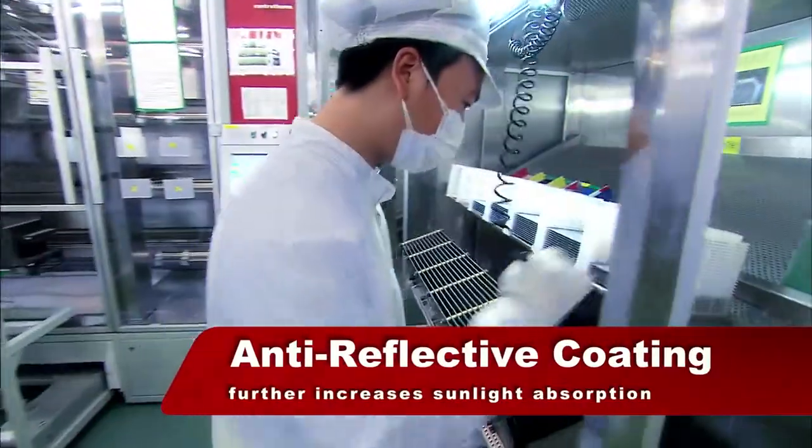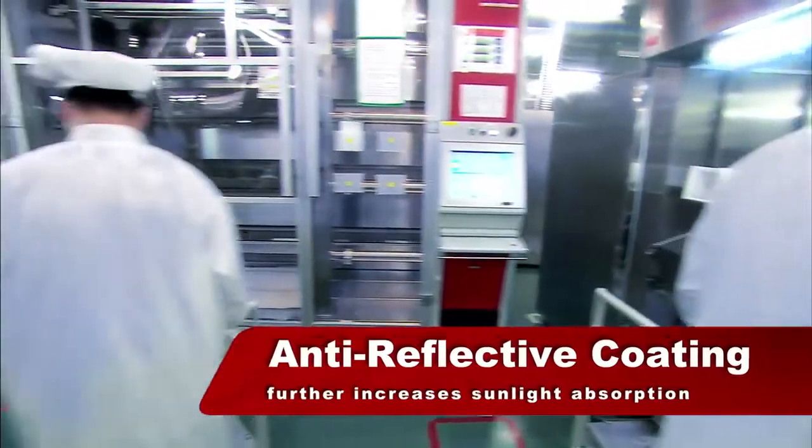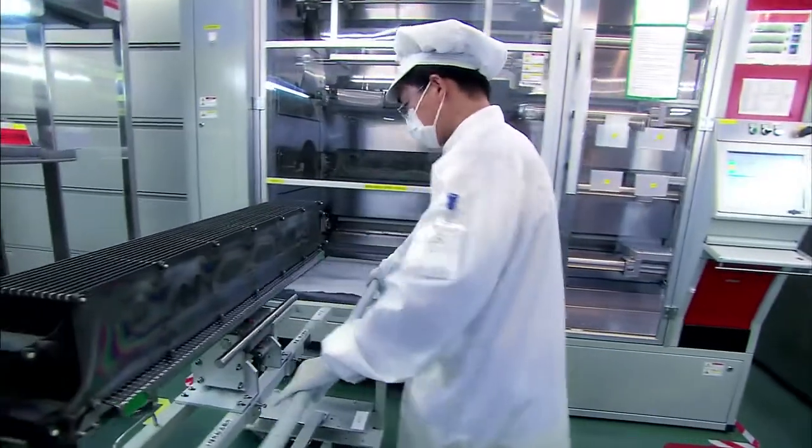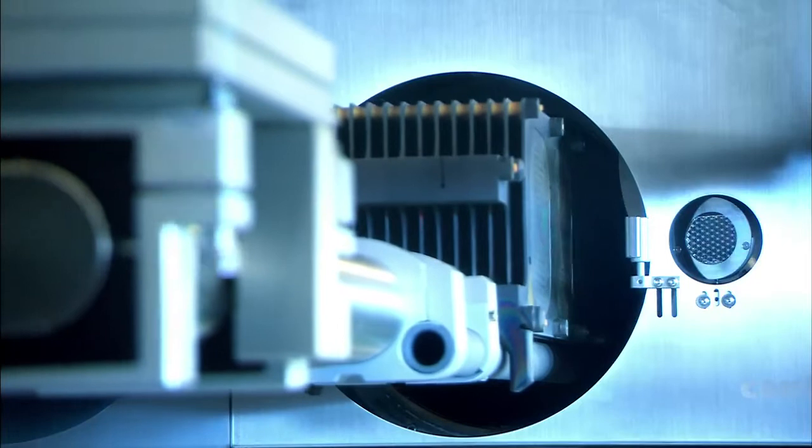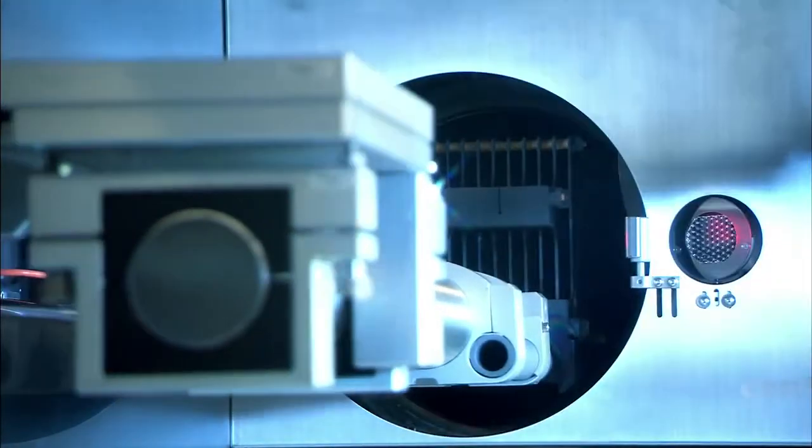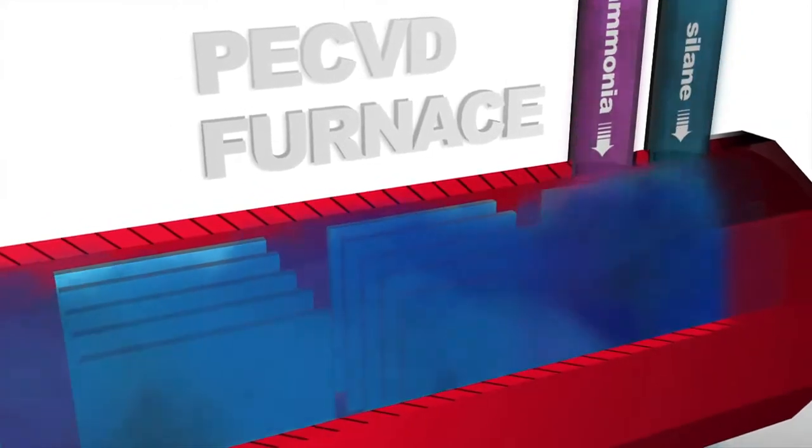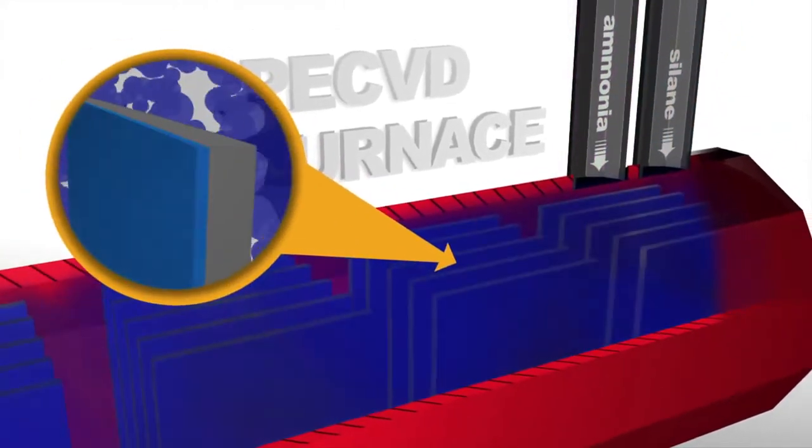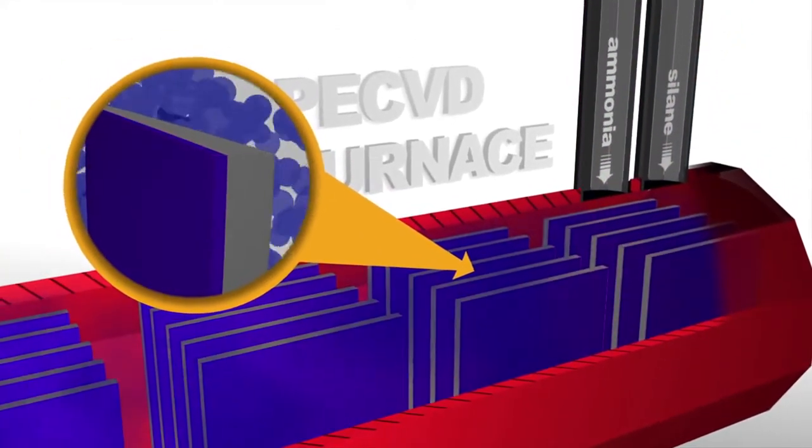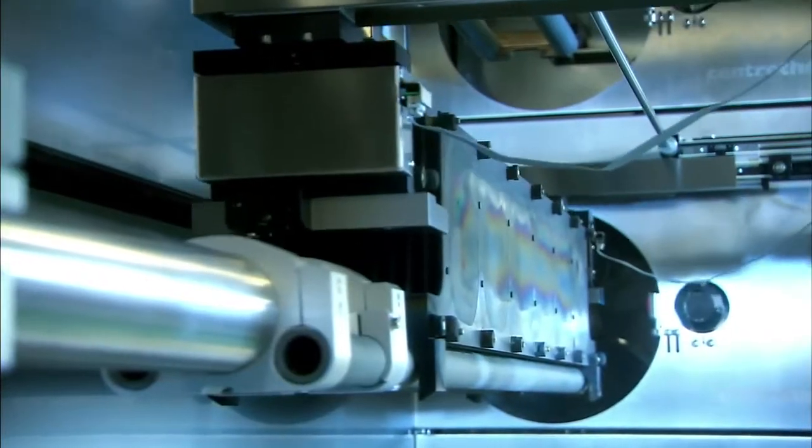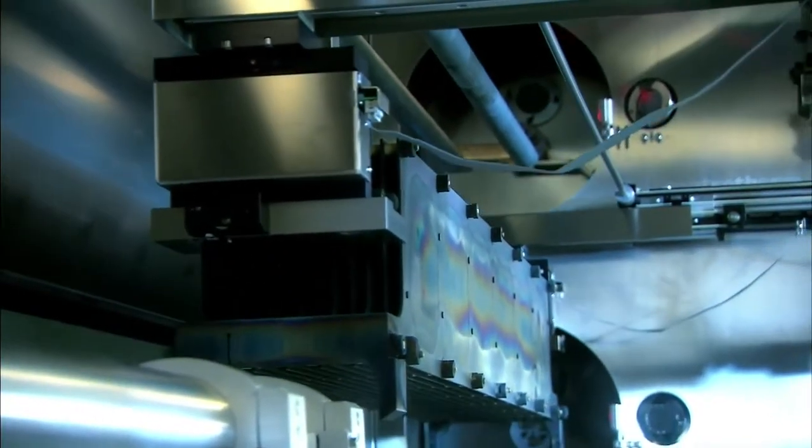In the plasma-enhanced chemical vapor deposition area, the wafers are placed in a furnace and coated with a silicon nitride anti-reflective coating. This coating further reduces reflectivity to 6%, which, combined with the texturing process, reduces the overall surface reflection to around 1% at special spectral range.